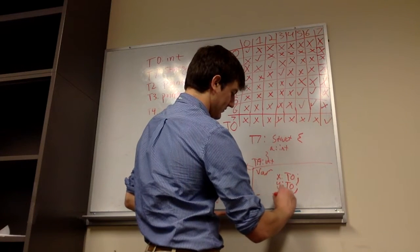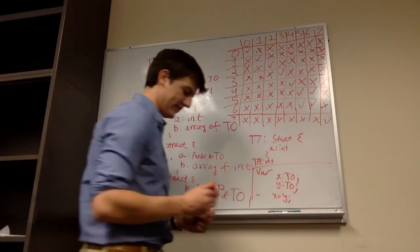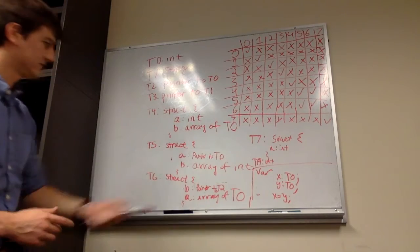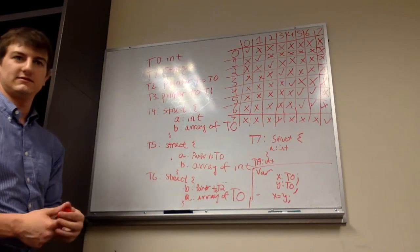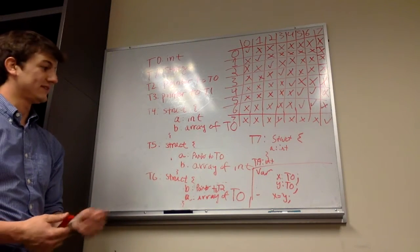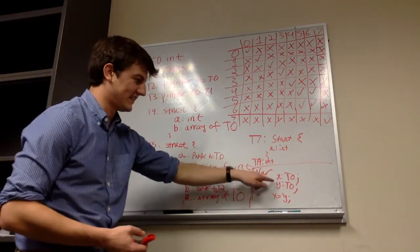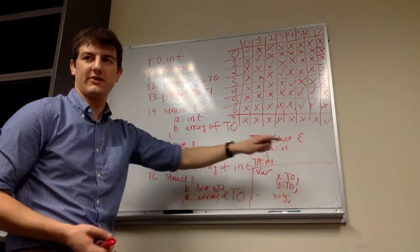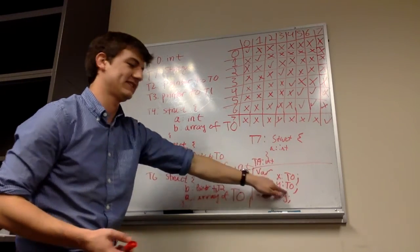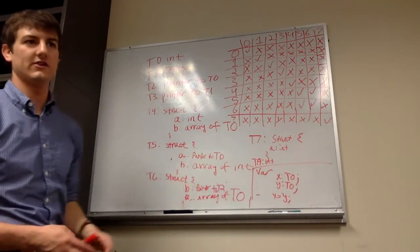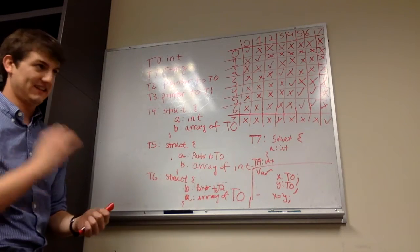And I said, can I do X equals Y in name equivalence? Yes, because the type of X has the name T0, and the type of Y, when it's declared, has the type T0. So those are the exact names.